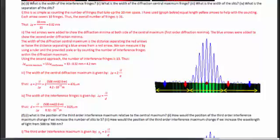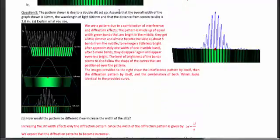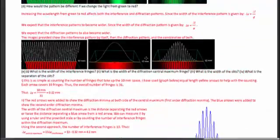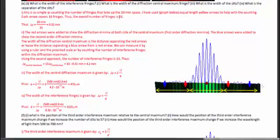The question asks us to find the width of the interference fringes, the width of the diffraction central maximum fringe, and the width and separation of the slits. The given information includes an overall graph width of 10 millimeters, a wavelength of 500 nanometers, and L, the distance from screen to slits, of 2 meters.